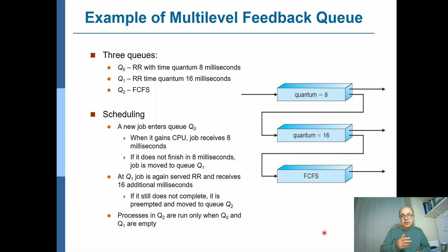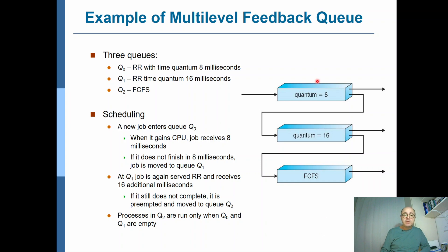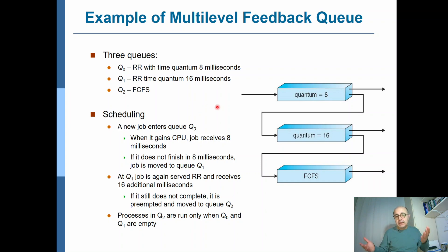Here is a concrete example. We have three queues. The scheduling algorithm for the first two is round robin, and for the third it is first come first served. The quantum lengths for the first two round robin queues are different. For demotion, the rule is that if the time quantum elapses but the process has still not completed, it gets demoted to the next queue. In this example there is no promotion — when a process leaves and comes back, it always starts from the top queue.